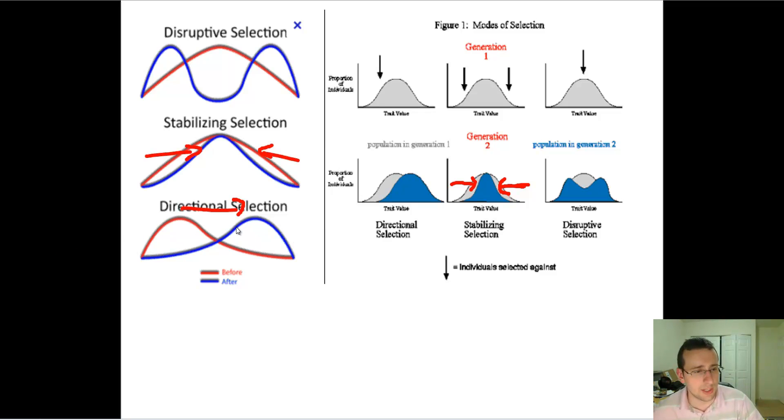So directional selection will change the population towards one end. Disruptive selection will change populations to both extremes. And stabilizing selection will change the population towards the middle look. So I hope that makes sense and you understand the different kinds of directional selection.